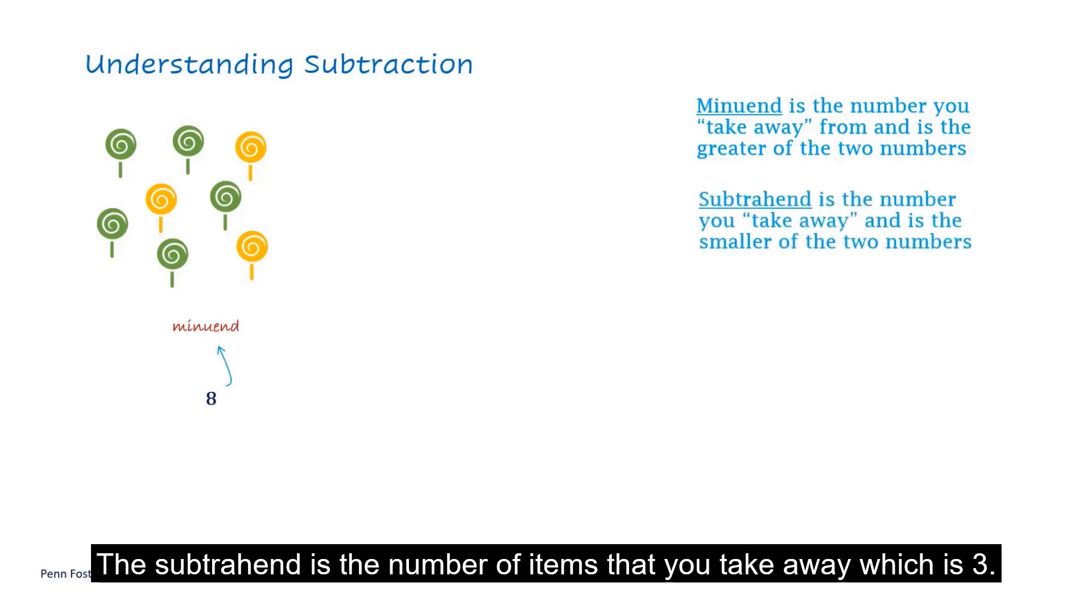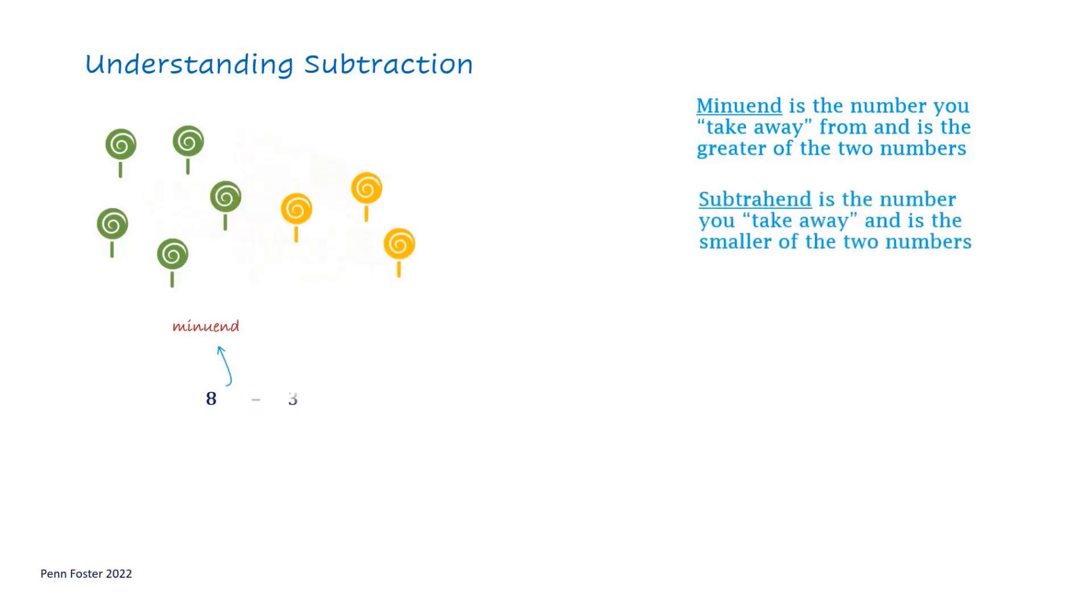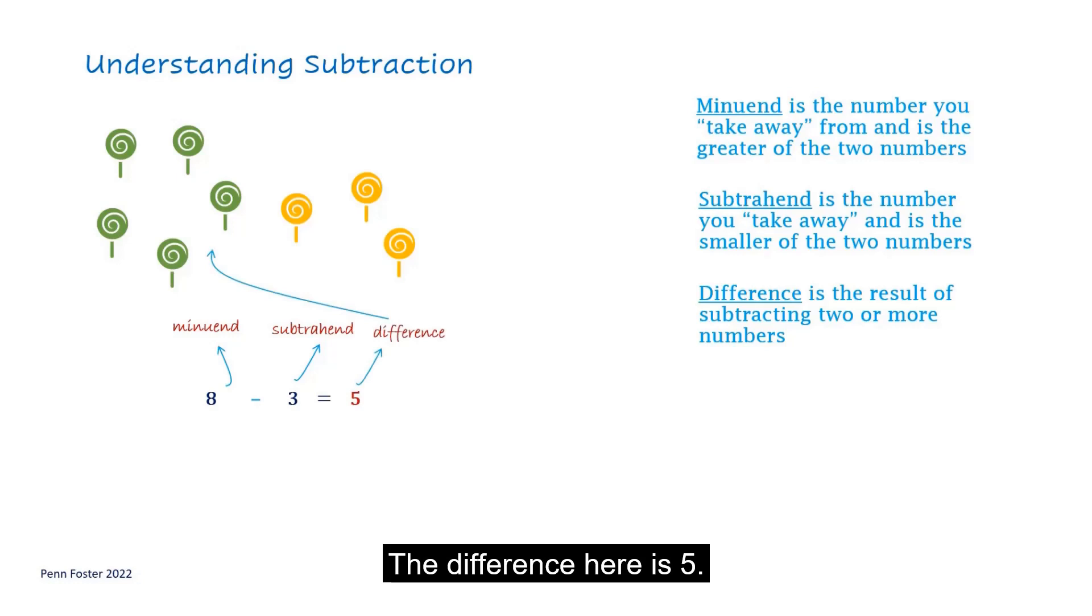The subtrahend is the number of items that you take away, which is 3. The difference is the number left over in the minuend. The difference here is 5.